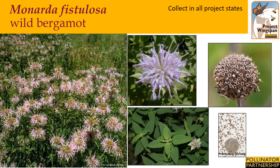Monarda fistulosa, wild bergamot or bee balm, occurs throughout moist to dryish soils in a variety of habitat areas. It typically grows two to five feet tall. As a member of the mint family, it tends to form large colonies. It has lavender, two-lipped, tubular flowers that appear in dense terminal heads on top of square stems. Its leaves are toothed and aromatic. The seeds will be ready to harvest when the flower heads turn from green to brown. The ripened seed is tiny and found inside the flower head — remove any remaining petals and place the entire dried flower head in your collection bag.